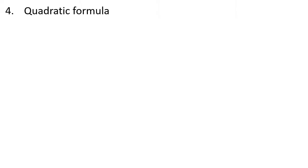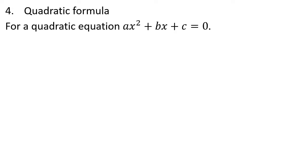Now, first of all, we will discuss the 3 methods. We will discuss the 4th method: what if we discuss the quadratic formula? This is the quadratic formula: x equals minus b plus or minus root of b squared minus 4ac, divided by 2a. Here b is the coefficient of x, a is the coefficient of x square, and c is the constant.